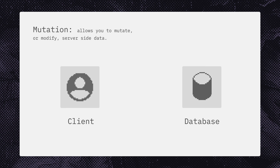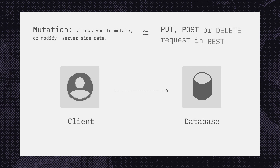The second type of operation is called a mutation. As the name suggests, this operation allows you to mutate or modify server-side data. A GraphQL mutation is similar to a PUT, POST, or DELETE request in the REST API.